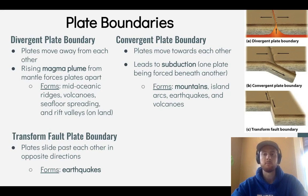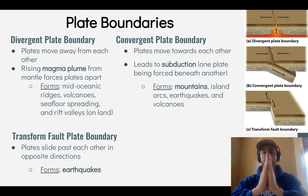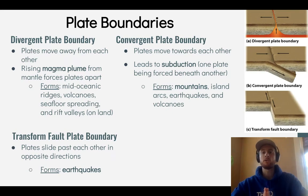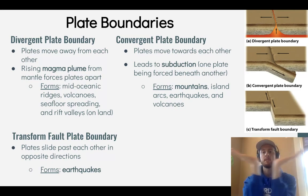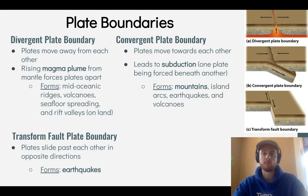Now we'll talk about the three different types of plate boundaries. The first is a divergent plate boundary, where plates are moving away from each other because heated magma from the mantle rises up toward the surface and pushes the plates apart. You can use a hand motion to remember that the magma rises from the mantle and forces the plates to diverge. This forms mid-oceanic ridges — which you can think of as underwater mountain ranges — as well as volcanoes, seafloor spreading, and on land, rift valleys.